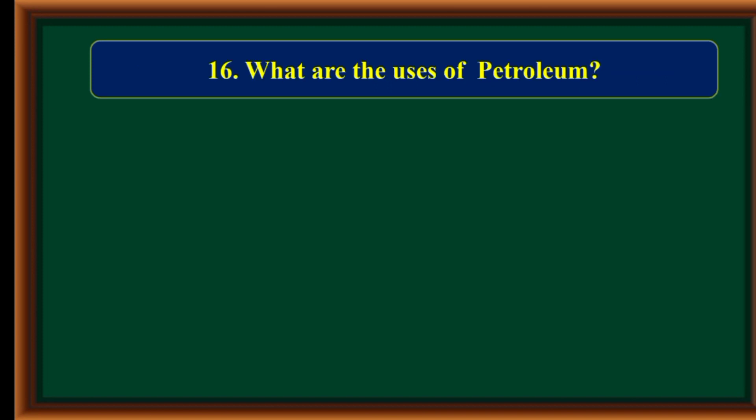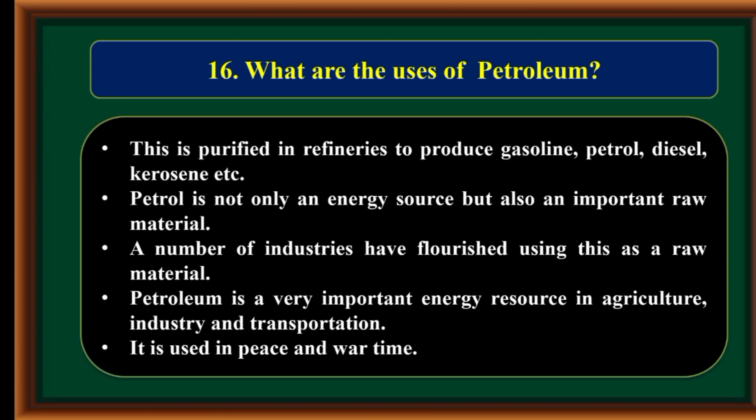What are the uses of petroleum? It is purified in refineries to produce gasoline, petrol, diesel, kerosene, etc. Petroleum is not only an energy source but also an important raw material. A number of industries have flourished using it as a raw material. It is a very important energy resource in agriculture, industry, and transportation, and is used in both peace and war time.